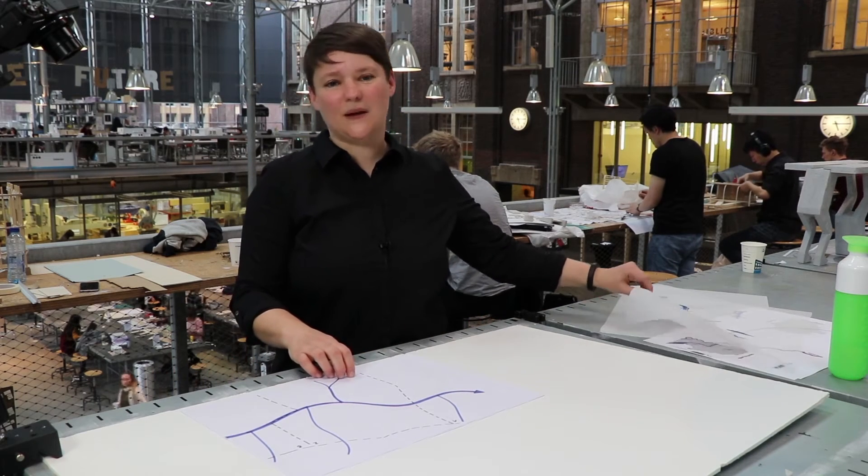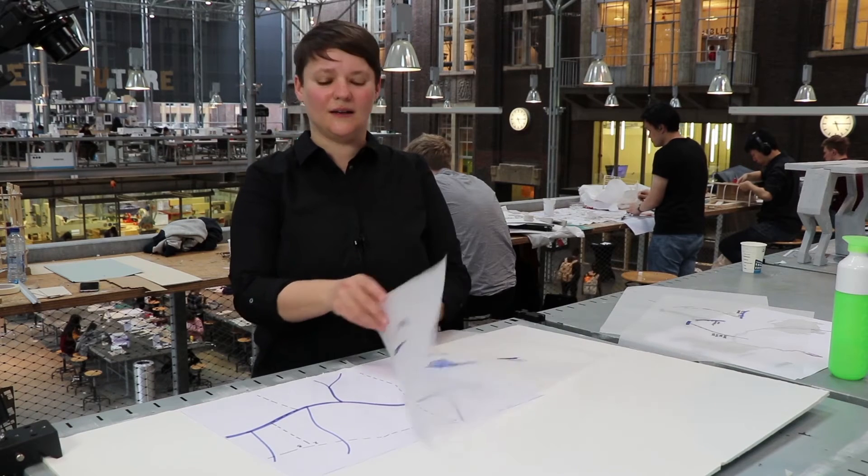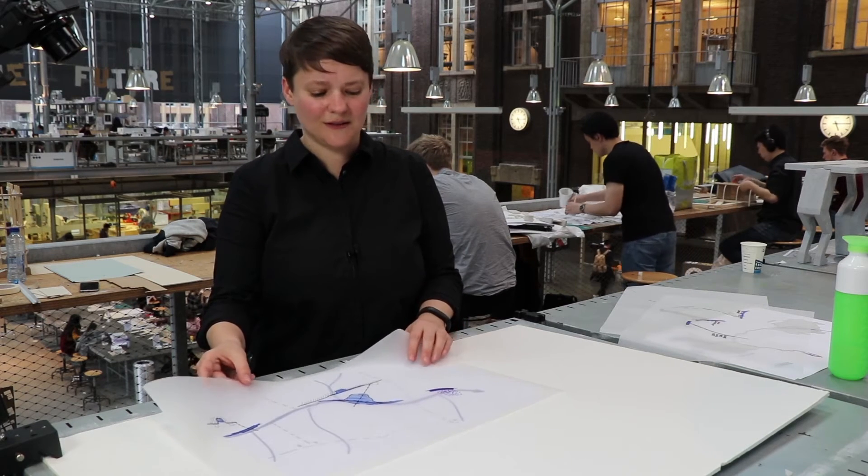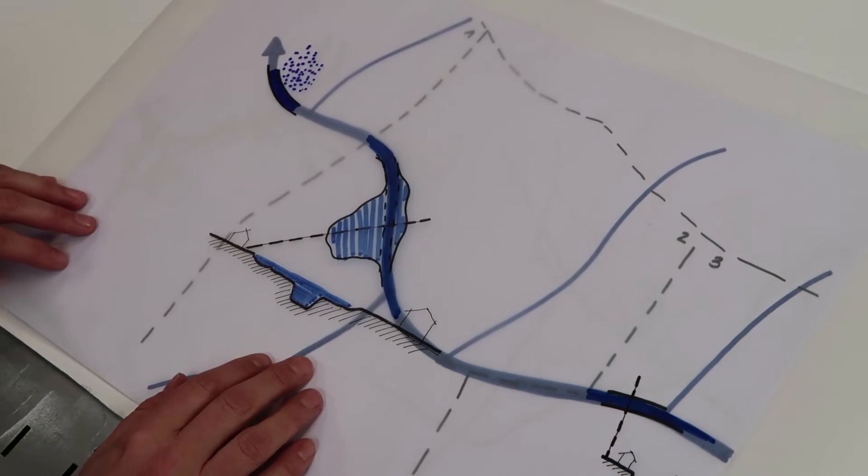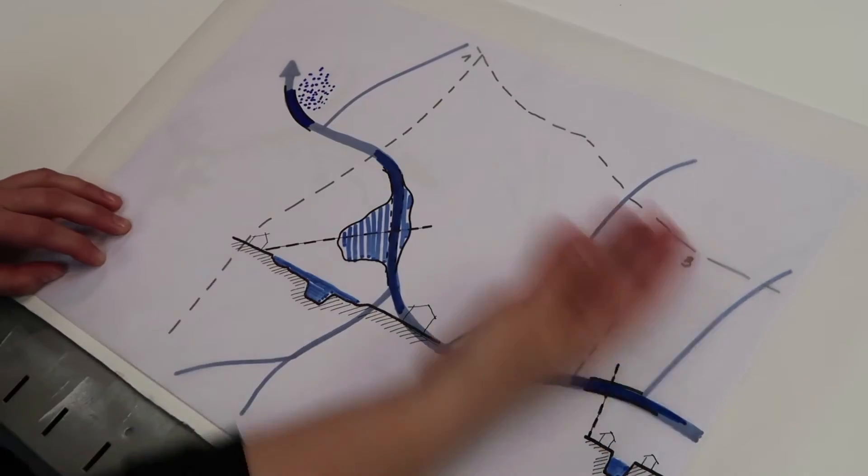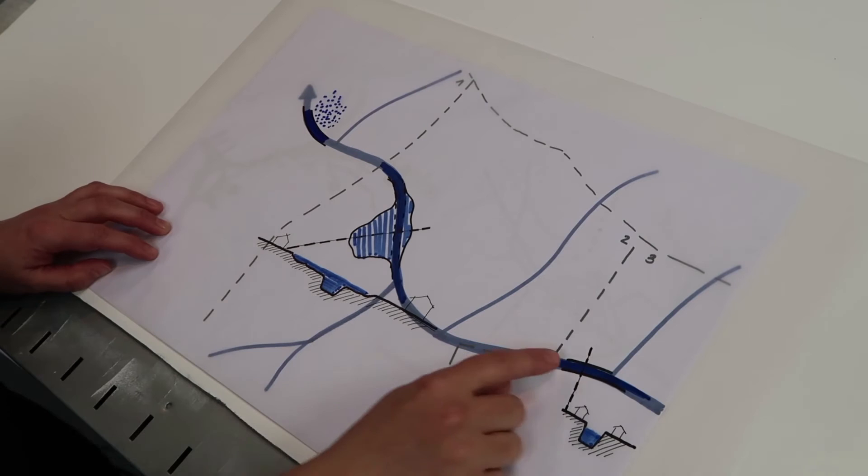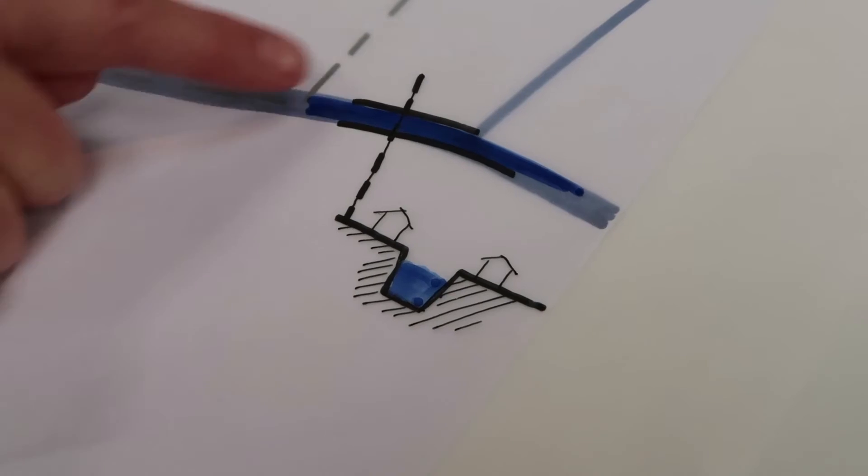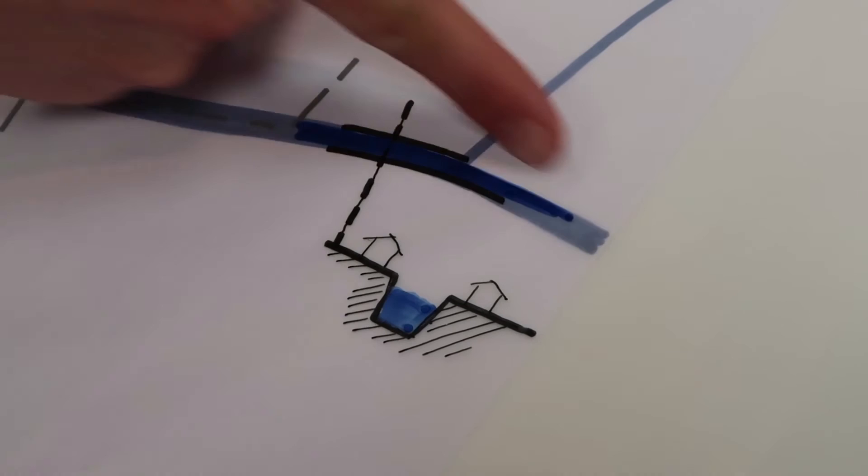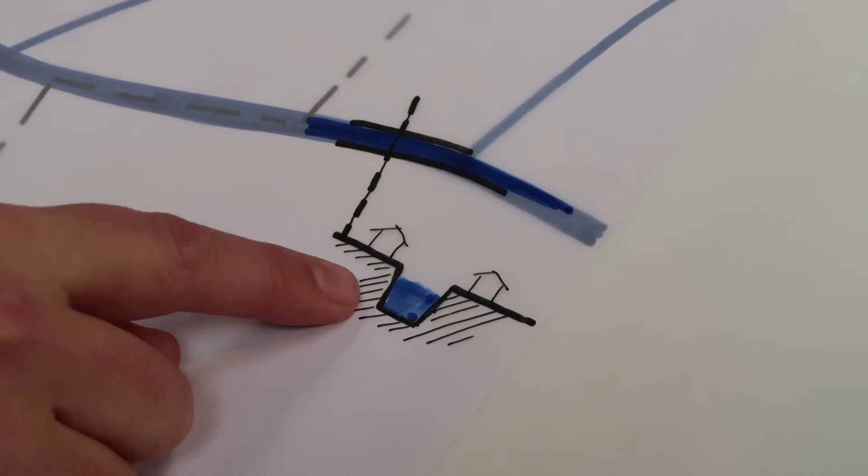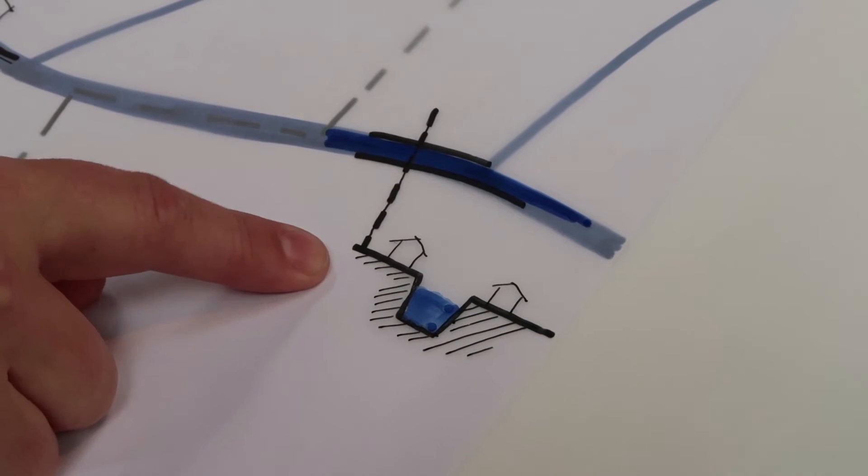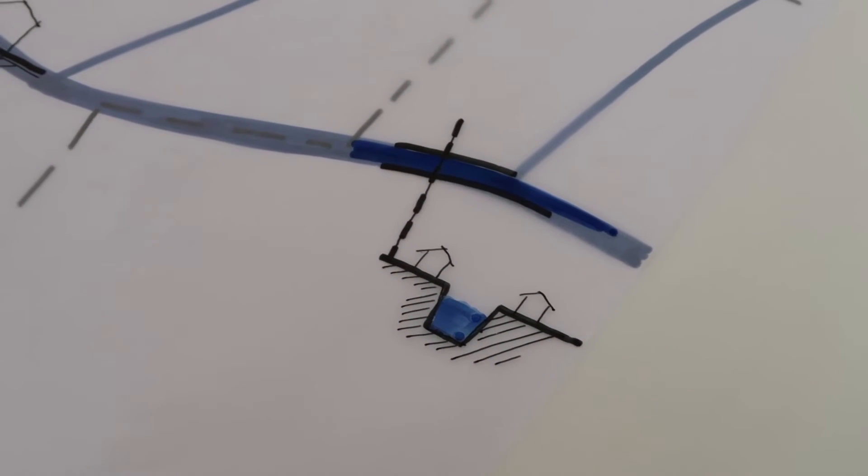For example, how different municipalities deal with implementing, manifesting the infrastructure on a local scale. Looking at these examples, we can see that maybe the third municipality here does not give a lot of space to water. As you can see in the section, the river is really embedded in a narrow bed, does not have a lot of space to widen.